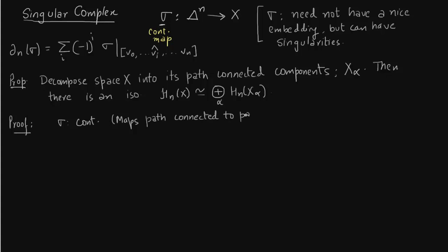The important implication is that these maps take path-connected components to path-connected components — that is, when you go from C_{n+1} to C_n, you take something which is path-connected to path-connected, which is nothing but the property of a continuous map. So C_n is decomposed as path-connected components, just like in simplicial homology.